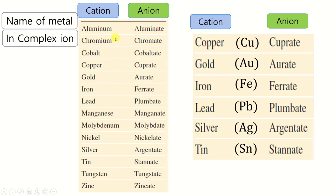These are the names of metals in the complex ion. If the complex ion is a cation, we use the element name. If the complex is an anion, we add -ate to the element name. So aluminum becomes aluminate, chromium becomes chromate, cobalt becomes cobaltate. The special elements where the anion name changes completely are: copper becomes cuprate, gold becomes aurate, iron becomes ferrate, lead becomes plumbate, silver becomes argentate, tin becomes stannate. You need to memorize these six.